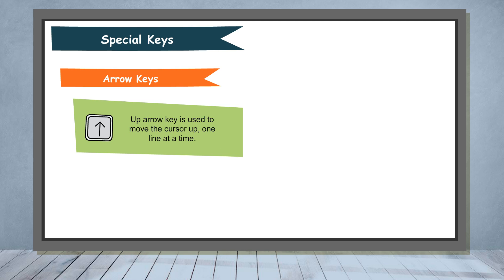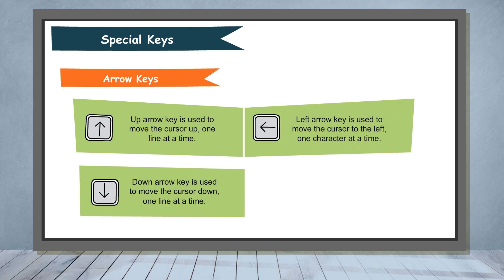Up arrow key is used to move the cursor up one line at a time. Down arrow key is used to move the cursor down one line at a time. Left arrow key is used to move the cursor to the left one character at a time. Right arrow key is used to move the cursor to the right one character at a time.